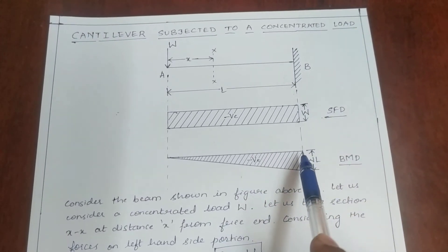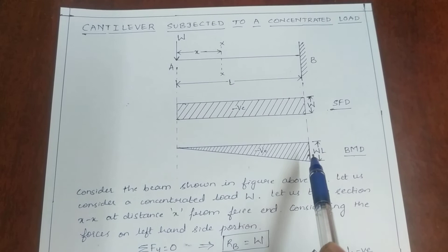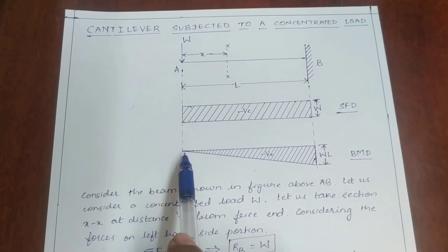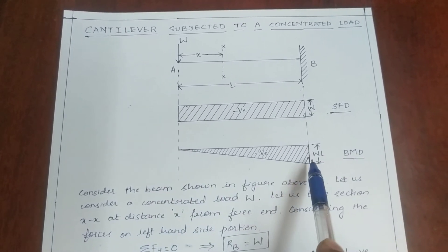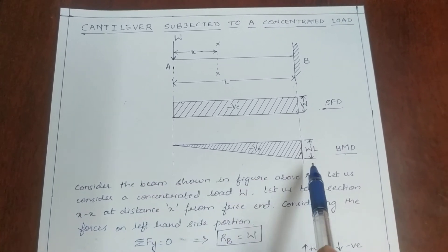So at point B, that is at the fixed support, we are getting minus WL. So here bending moment is zero, here it is minus WL, and we have to draw a slanting line.